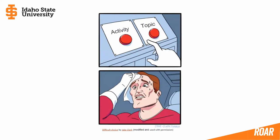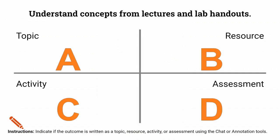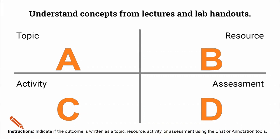Now I want you to have some fun. I'm going to present you with some student learning outcomes to classify as topics, resources, activities, or assessments. You can use your annotation tools or the chat function. First up: 'At the end of this unit, students will be able to understand concepts from lectures and lab handouts.' How would you classify this outcome — is it a topic, a resource, an activity, or an assessment?